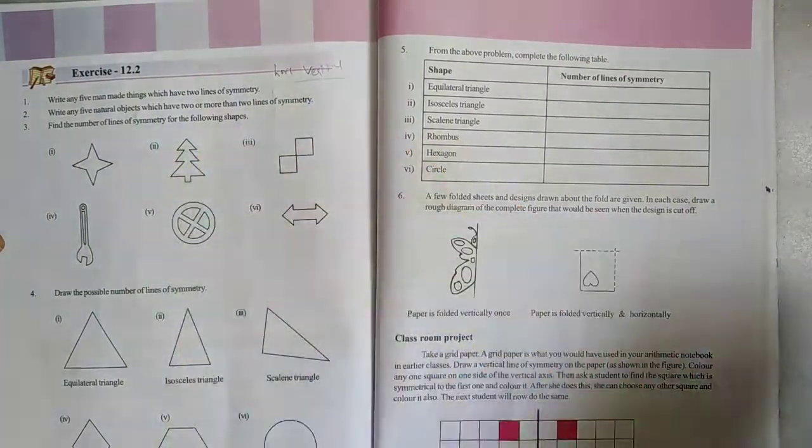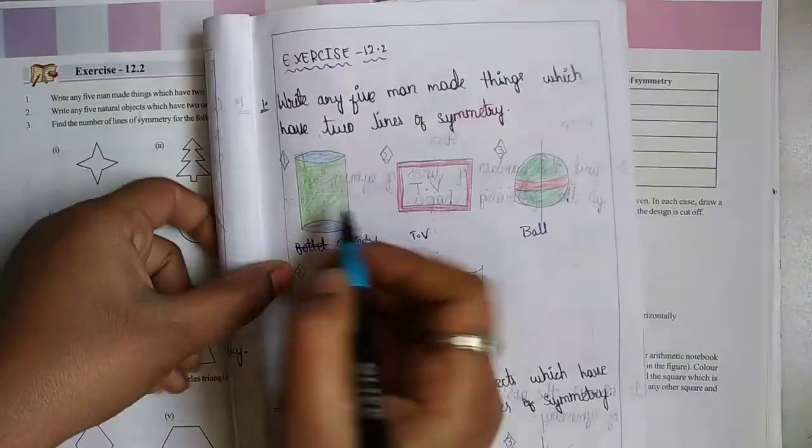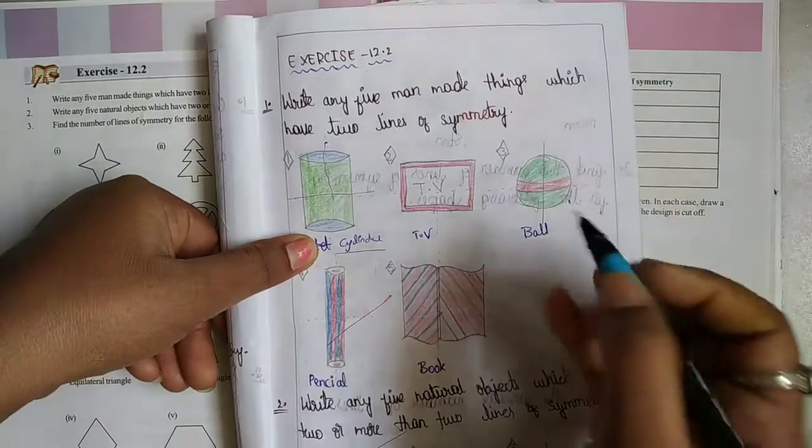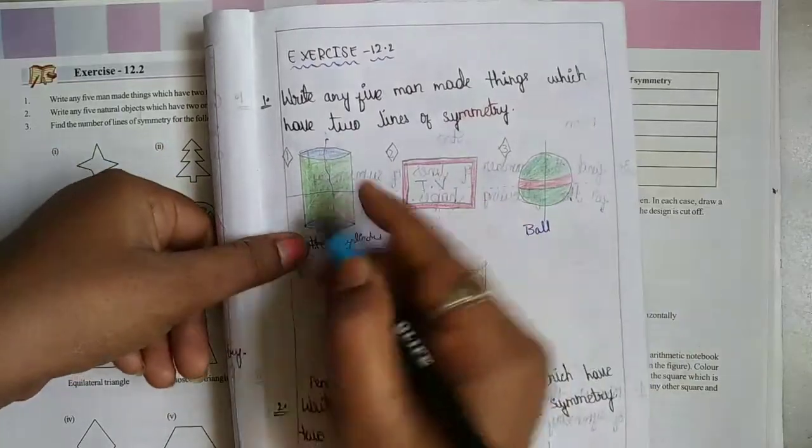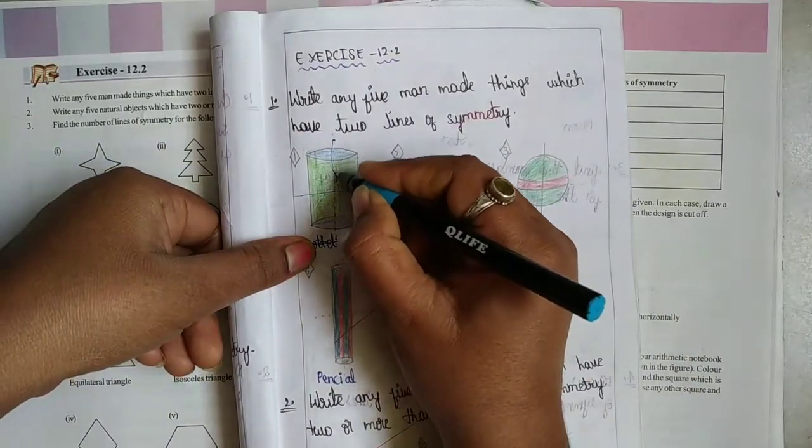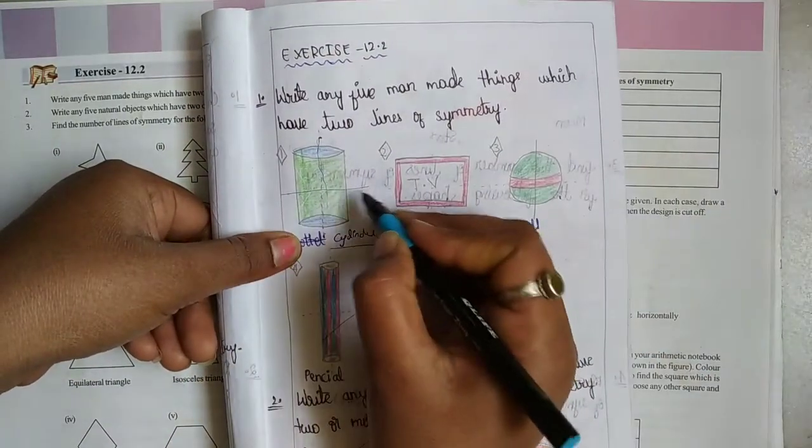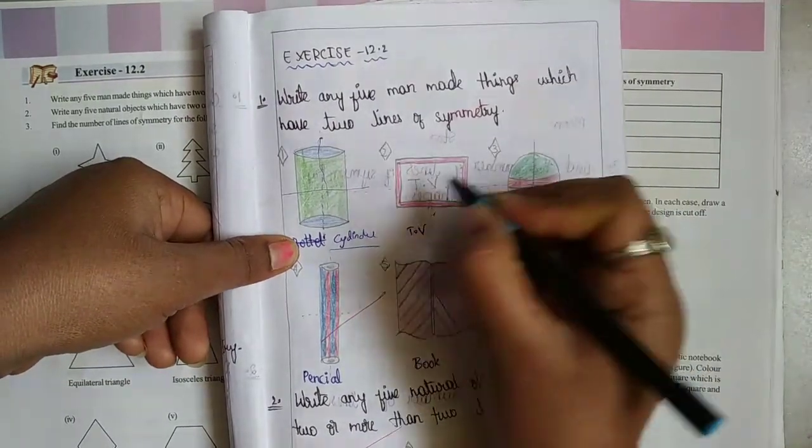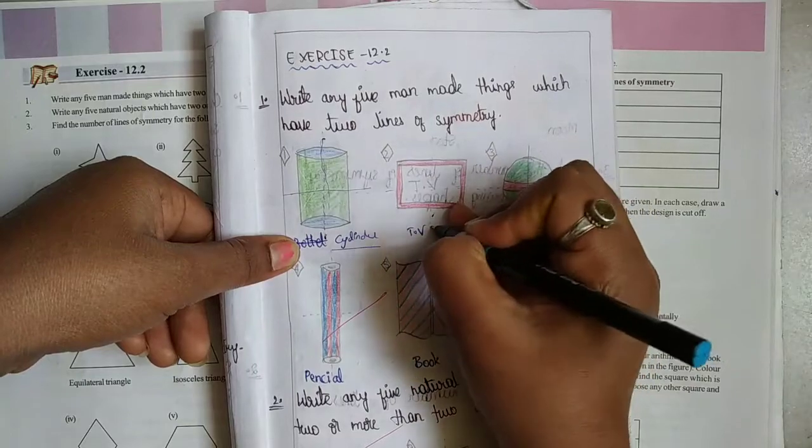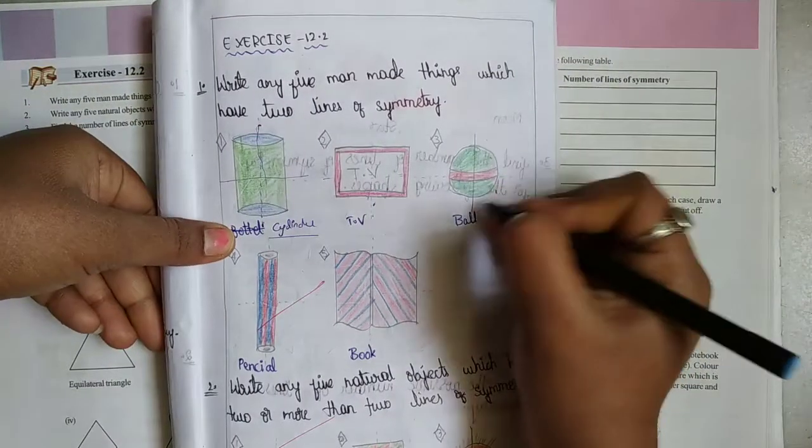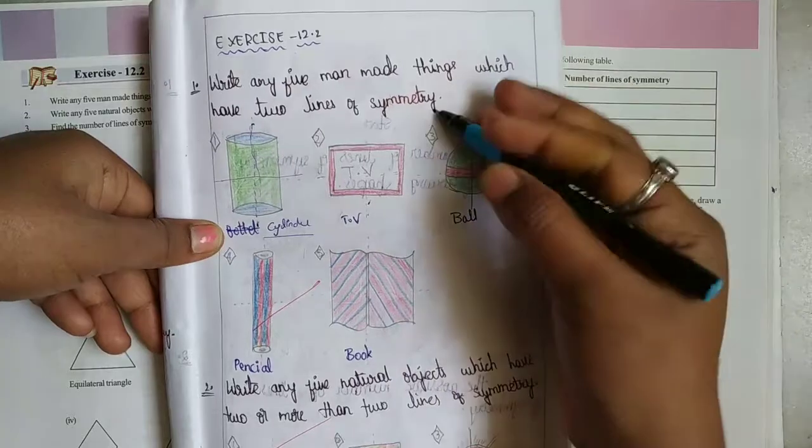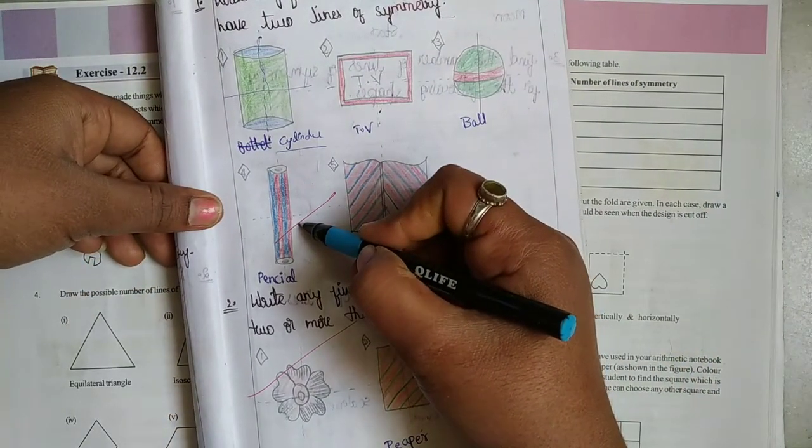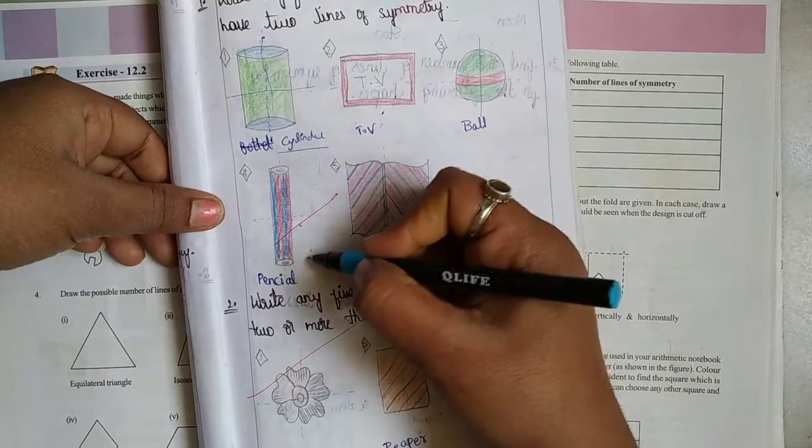First one, what I am going to talk about is cylinder. It has 2 lines of symmetry: horizontal symmetry and vertical symmetry. Ball also has horizontal symmetry and vertical symmetry.